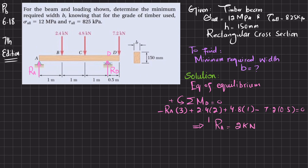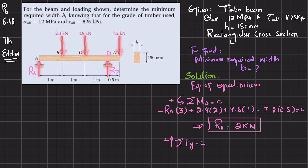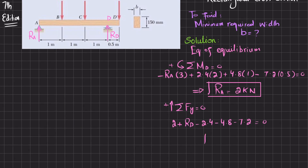With Ra known, we find Rd using the sum of forces in the y-direction equal to zero. Ra + Rd − 2.4 − 4.8 − 7.2 = 0. Substituting Ra = 2 kN gives Rd = 12.4 kN.